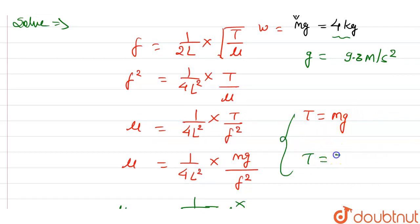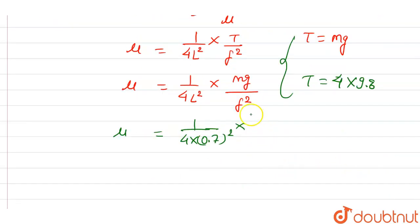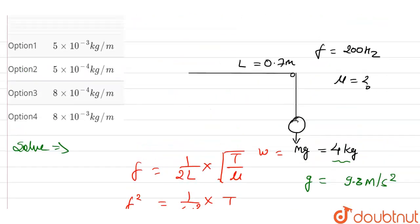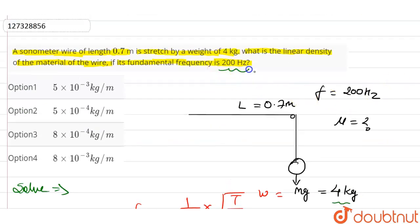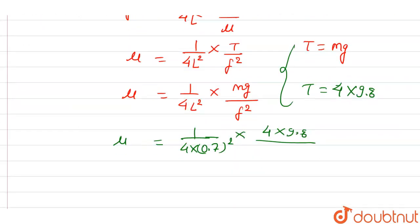So how much weight will happen? T equals our mass, 4 kg, and here is 9.8. If we multiply this, we will get tension. We will put this value here: 4 times 9.8 divided by here. We have given F value, 200 Hz given. We will square it here, 200 Hz square it here.